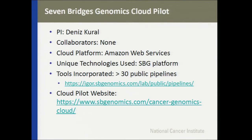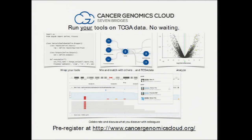Finally, we have the Seven Bridges Cloud Pilot. The PI is Dennis Kural. Unlike the other two systems, they are using Amazon Web Services. Their unique technology includes the Seven Bridges Genomics platform, and they've incorporated already over 30 public pipelines. Their Cloud Pilot website is sbgenomics.com/cancer-genomics-cloud. At the Seven Bridges Cancer Genomics Cloud, you'll be able to wrap your tools, mix your data and match it with other data including TCGA, analyze the data, and collaborate and discuss your discoveries with colleagues.